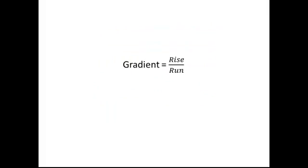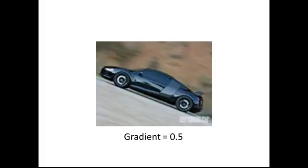The formula which we use to calculate gradient is rise over run. We can then substitute the values which we just obtained into this formula. This gives us 6 over 12, which is 0.5, therefore the gradient of this hill is 0.5.